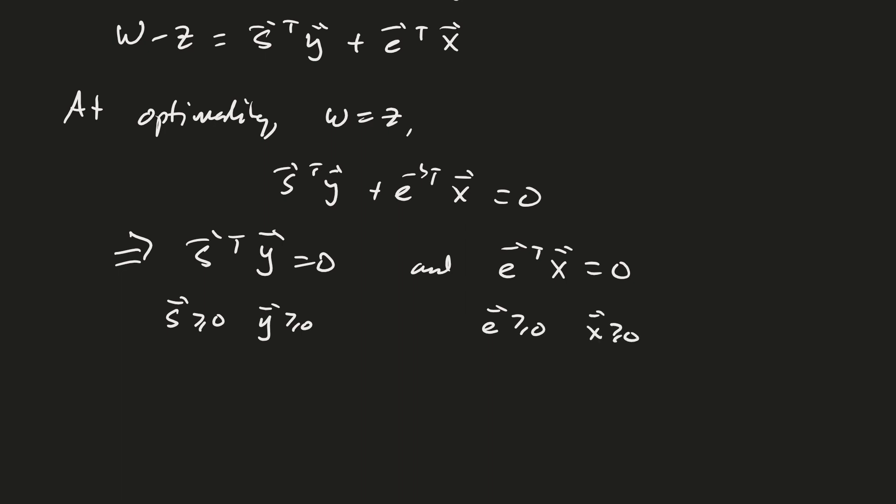Everything is greater than or equal to 0 here. So if this sum is equal to 0, that must mean that each of these pieces are equal to 0. And actually, if each of these pieces are equal to 0, because each vector is equal to 0, that means that each component must be equal to 0.